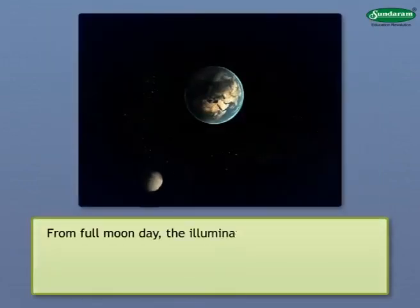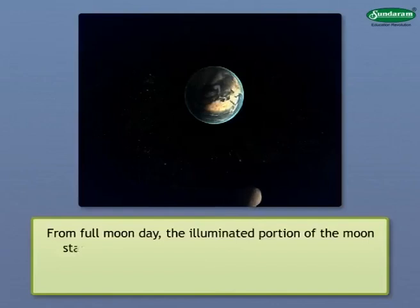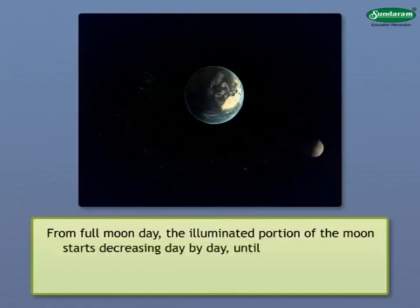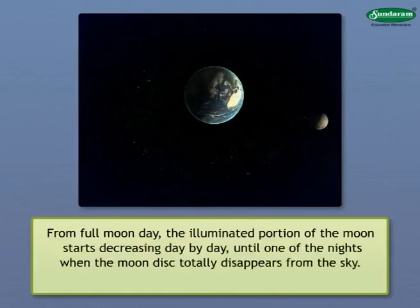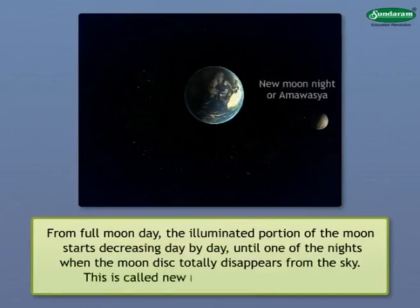From Full Moon Day, the illuminated portion of the Moon starts decreasing day by day until one of the nights when the Moon disk totally disappears from the sky. This is called New Moon Night or Amavasya.